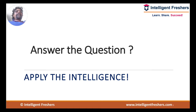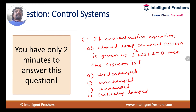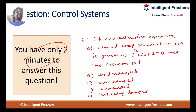Hi everybody. Answer the question — you need to apply the intelligence you have, just two minutes time to answer this question. This week's question is on control systems, based on very basic fundamentals of characteristics of a second order control system. The question is: if the characteristic equation of a closed loop control system is given by s² + 2s + 2 = 0, then the system is: under damped, over damped, undamped, or critically damped. You need to choose the correct option.